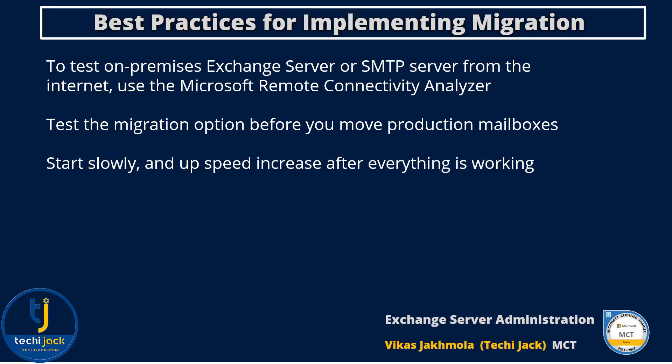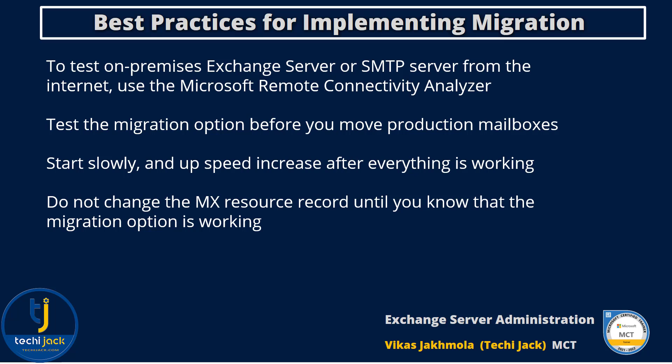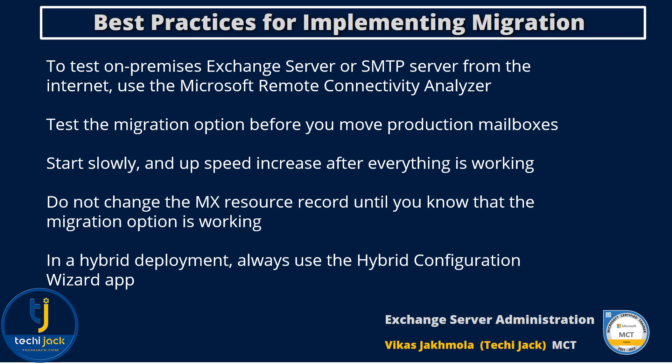You can start slowly and speed up after everything is working. At the beginning, move mailboxes only for users who can manage with a short outage. After you gain the confidence that the hybrid deployment works reliably, move the other mailboxes as well. Do not change the MX record until you know that the migration option is working. In a hybrid deployment, always use the Hybrid Configuration Wizard app. This app is a standalone application that provides a wizard handling all the necessary configuration settings for you, and is also able to investigate issues.